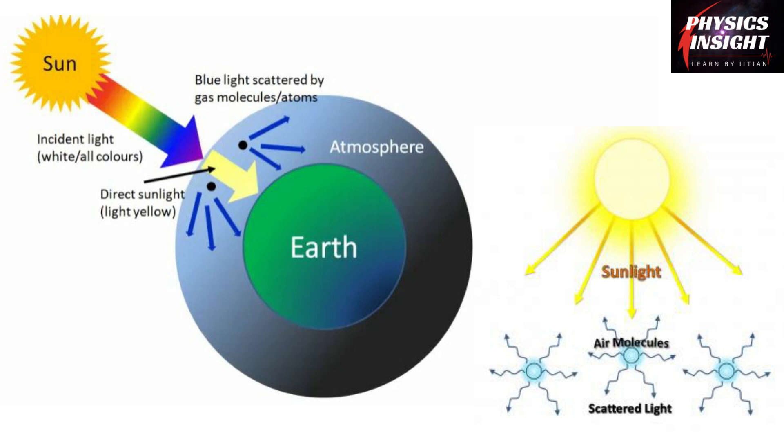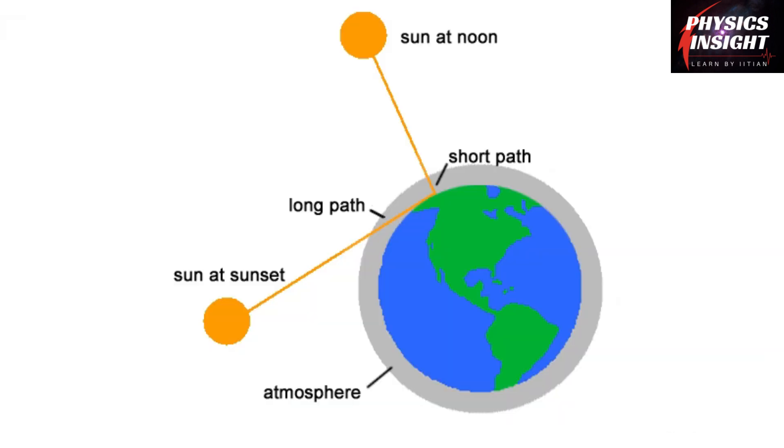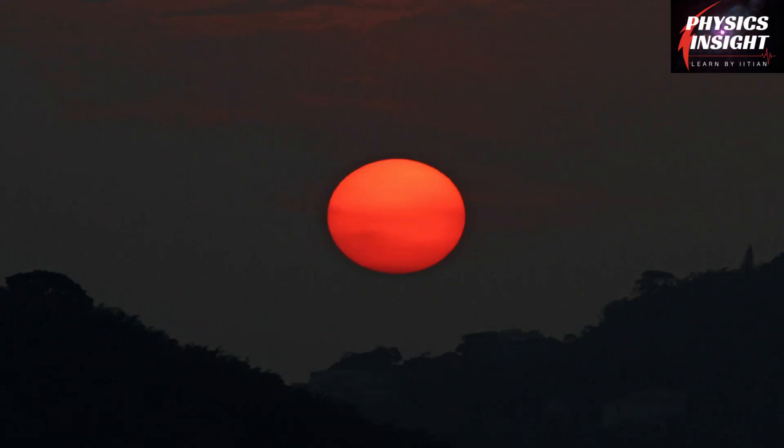Colors having longer wavelengths scatter less, and this is the reason that the remaining light which reaches our eyes makes the sun appear to be yellow. During sunrise and sunset, the distance sunlight travels through the atmosphere is greatest. So at that time blue light scatters even more and instead of yellow we see a red sun.